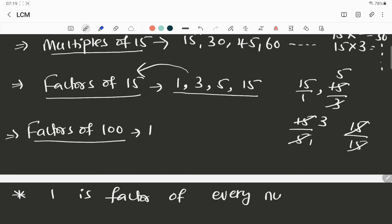So whatever number is given, 1 is a common factor for everything. So factors of 100 are 1. Then you can go for 2. 3 won't come here. Then definitely 4. 4 is there. And after that, 5 is there.